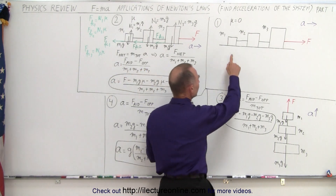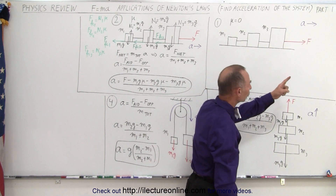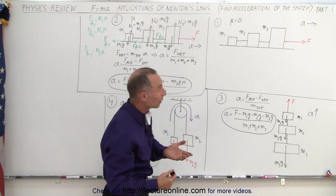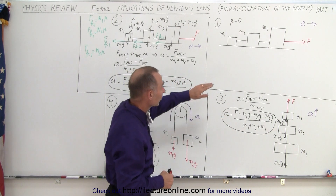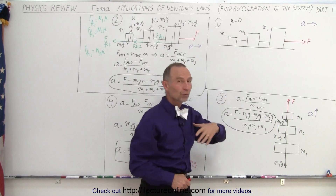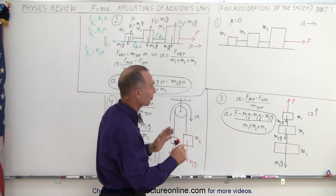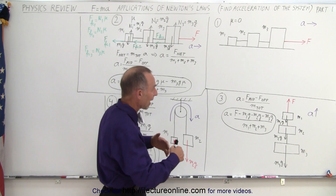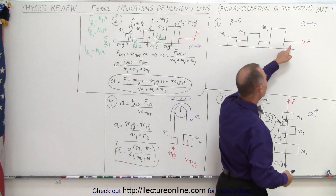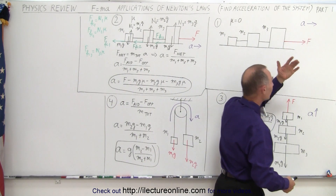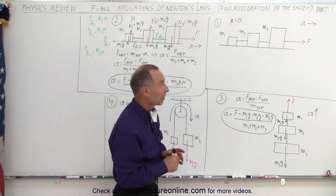Here we have a system of three masses attached to one another with strings and one force pulling them to the right, and presumably there will be an acceleration to the right. For the first example we're going to assume that the friction is zero, so there's no friction involved at all. After you draw the drawing, you indicate the force acting on the system and the expected direction of acceleration.